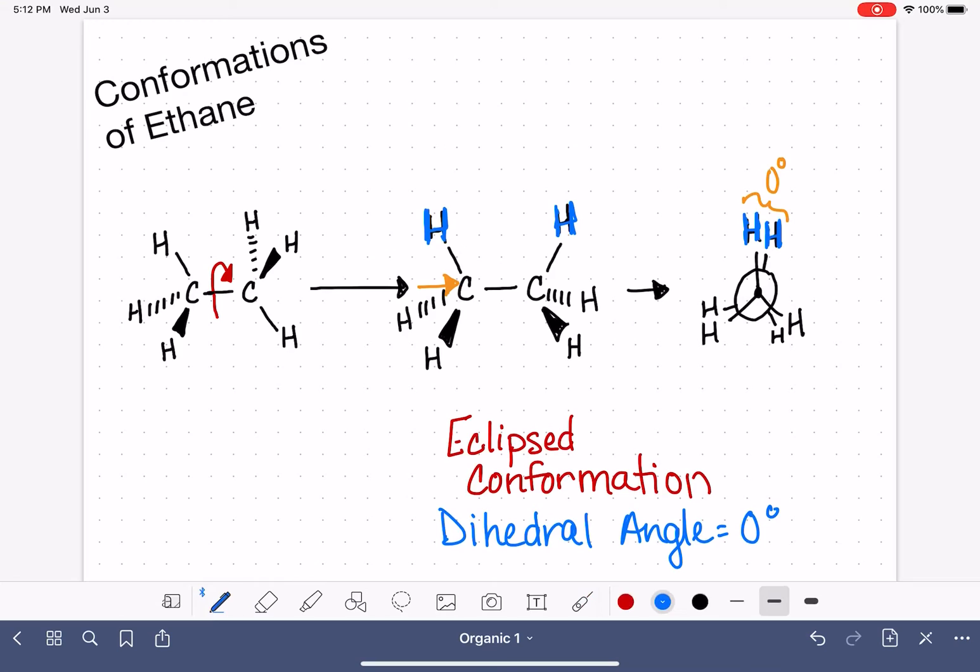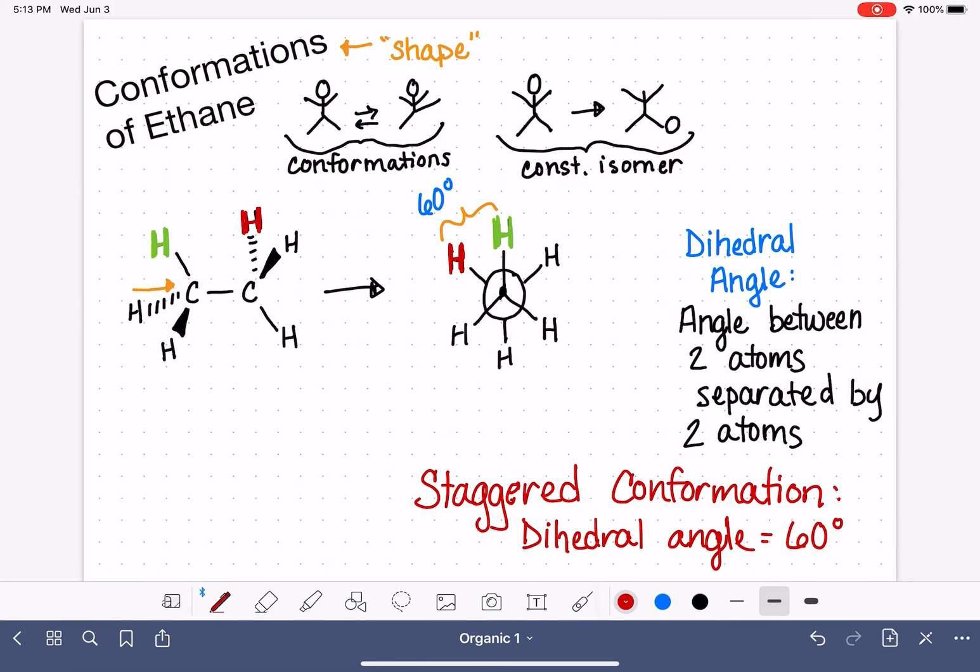Because those hydrogen atoms are close together in the eclipsed conformation, this particular shape of the molecule is a high-energy conformation. Eclipsed is our high-energy conformation. And likewise, staggered is our low-energy conformation.